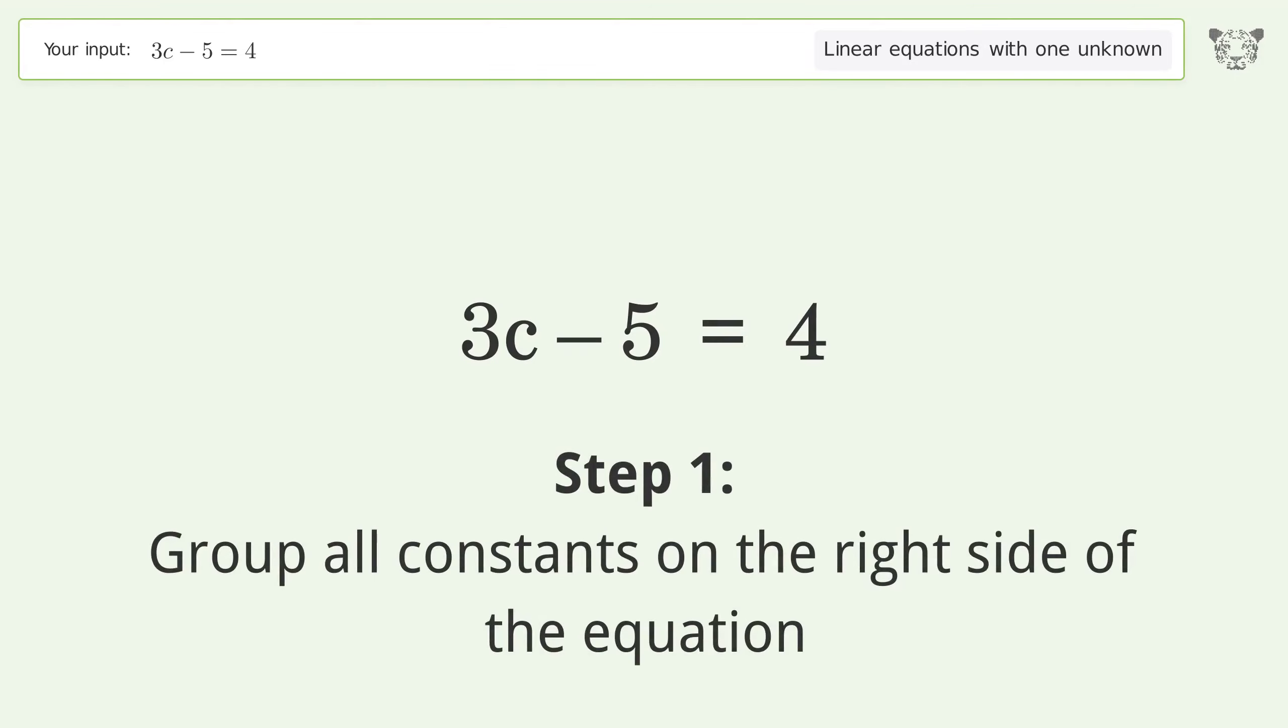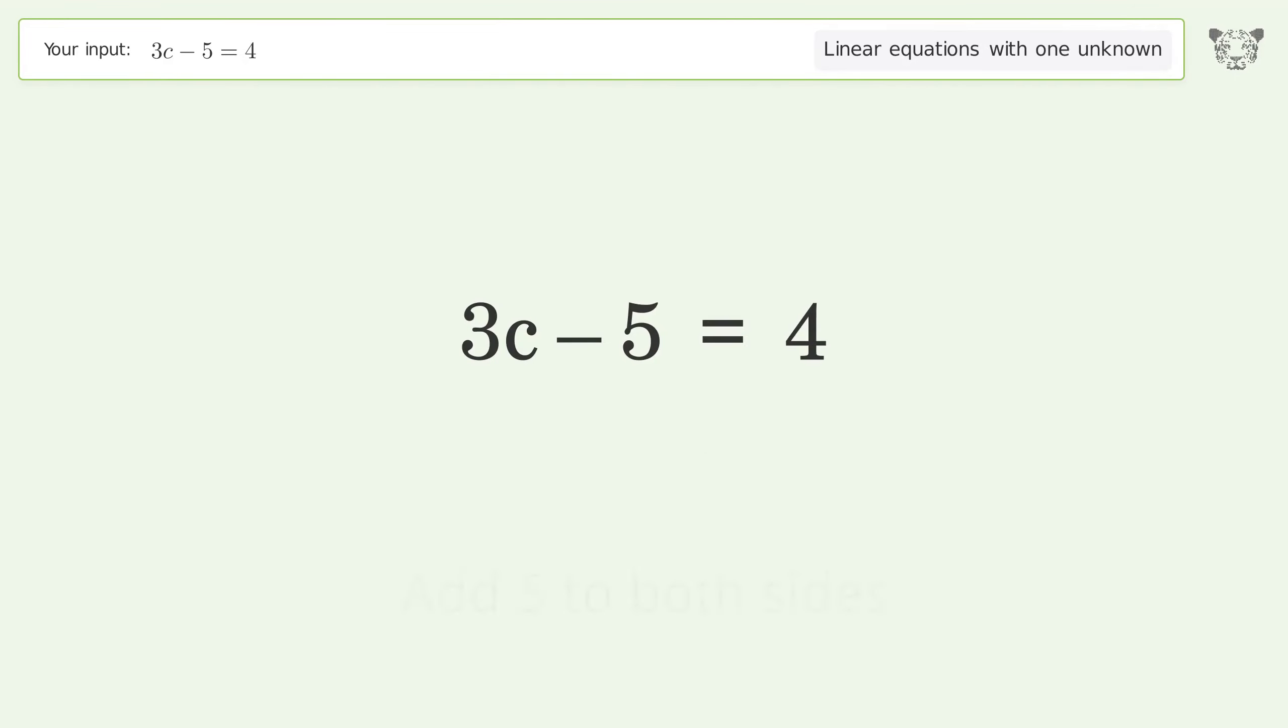Group all constants on the right side of the equation. Add 5 to both sides. Simplify the arithmetic.